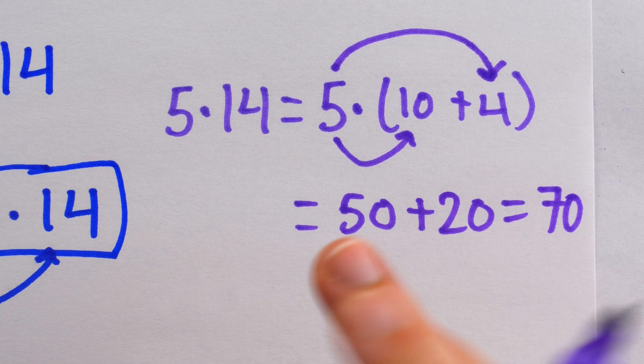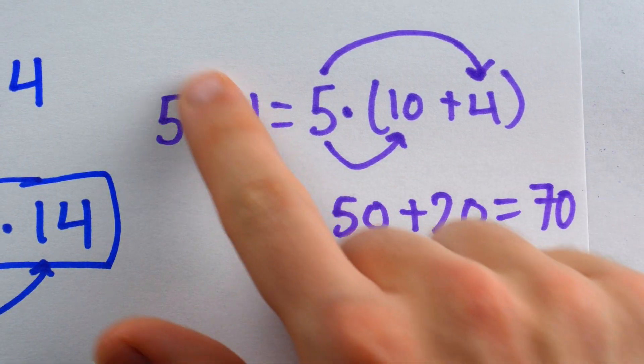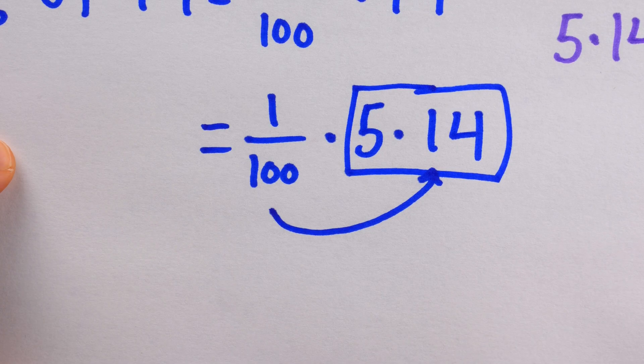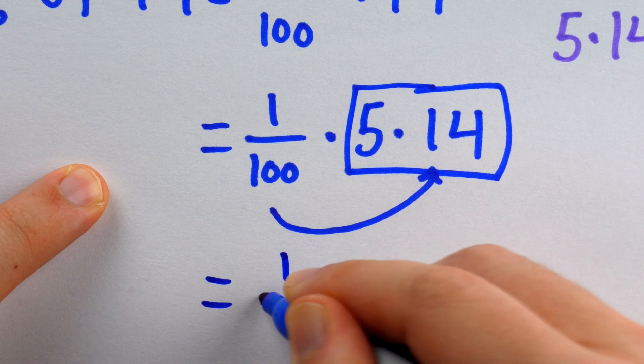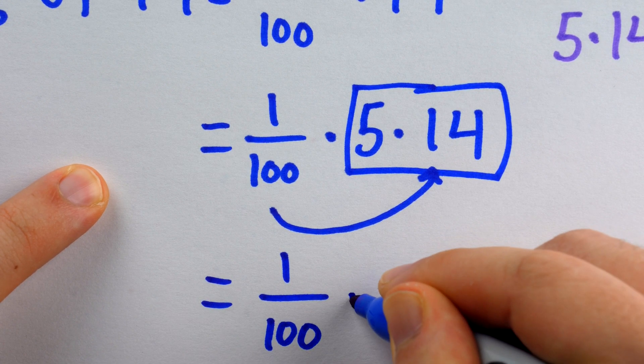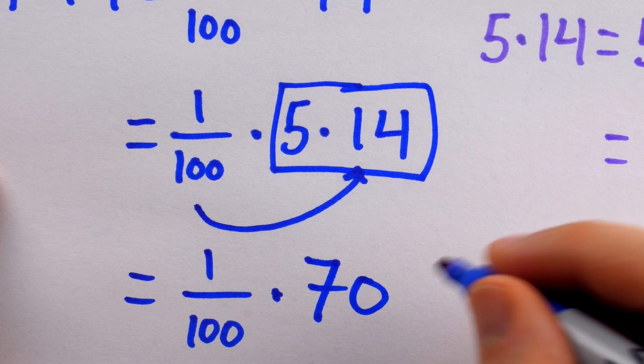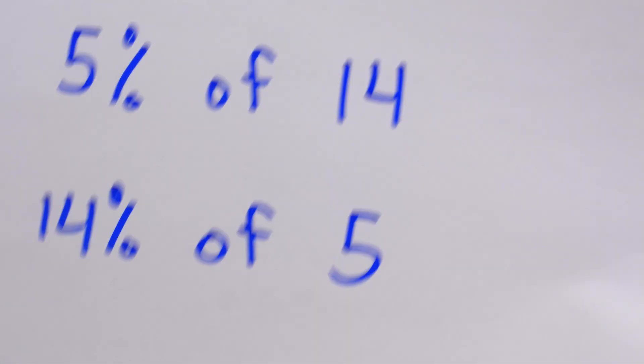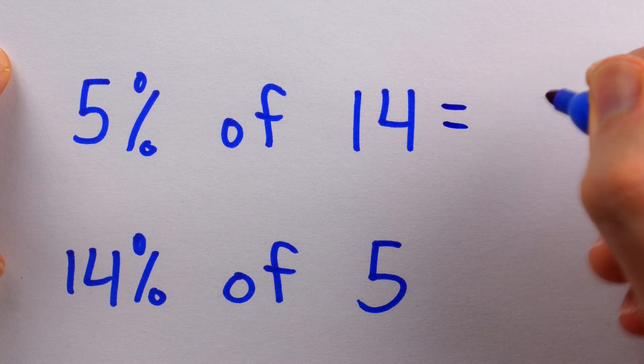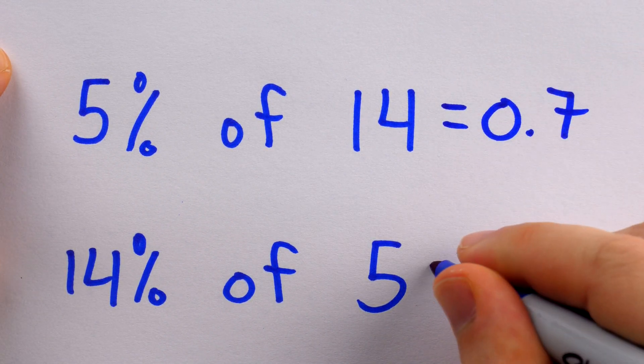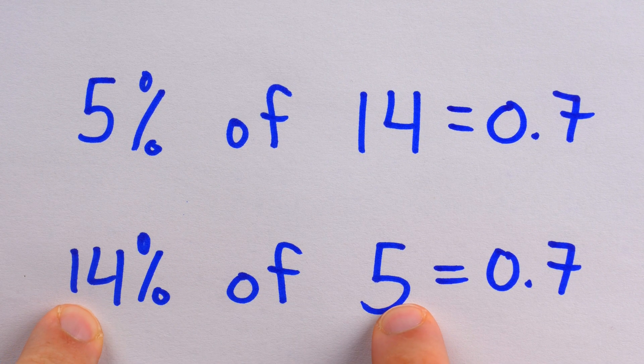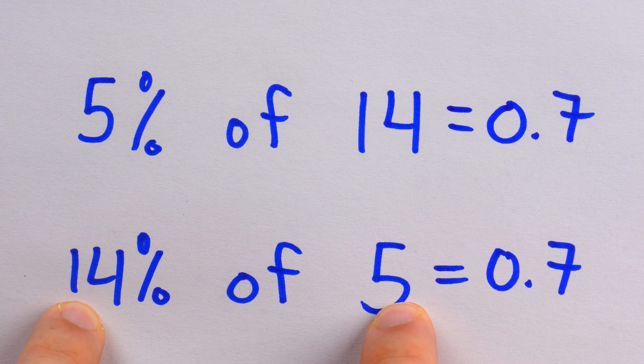The distributive property is one of the first keys to getting good at mental math and breaking down non-obvious problems into obvious ones. Since I know 5 times 14 is 70, this is just 1 over 100 times 70, and so we know the answer is 70 over 100, or 0.7. So what's 5% of 14? What's 14% of 5? Each one is just 0.7. All we have to do to figure that out is ignore the percentage, just do 14 times 5, which is 70, and then divide it by 100, which becomes 0.7.